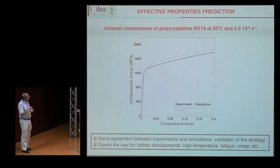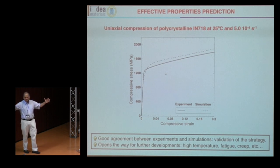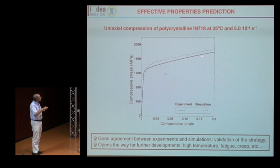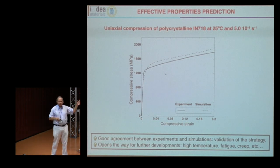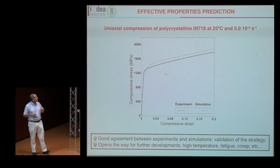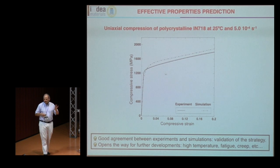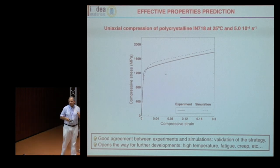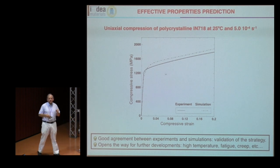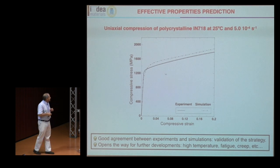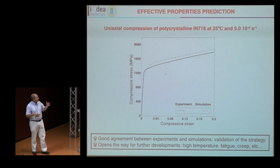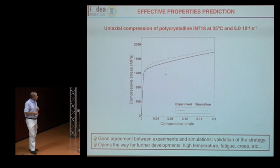These are the results. The experimental polycrystalline compression curve is the continuous line; the simulation gives the flow stress and hardening with very little scatter. There is a slight difference of about 4–5% that we believe is related to the presence of annealing twins in the microstructure, which play a role — not very important for monotonic deformation, but much more important in fatigue. We can extend this methodology to study fatigue using FFT to simulate many cycles, with a crystal plasticity model accounting for kinematic hardening. This opens the way to high temperature, creep, fatigue, and other virtual tests.